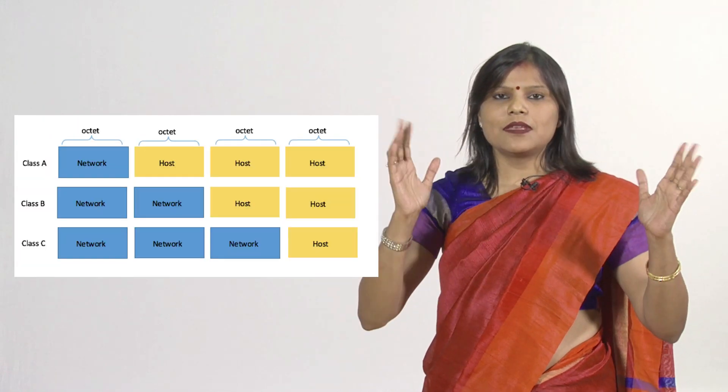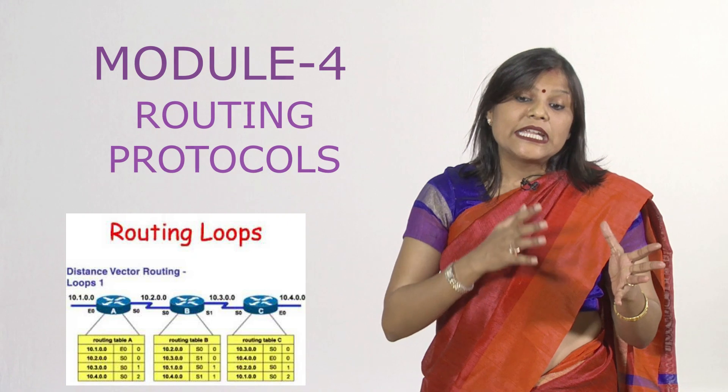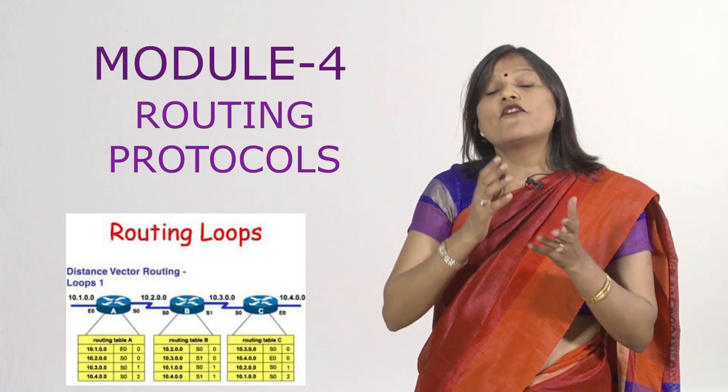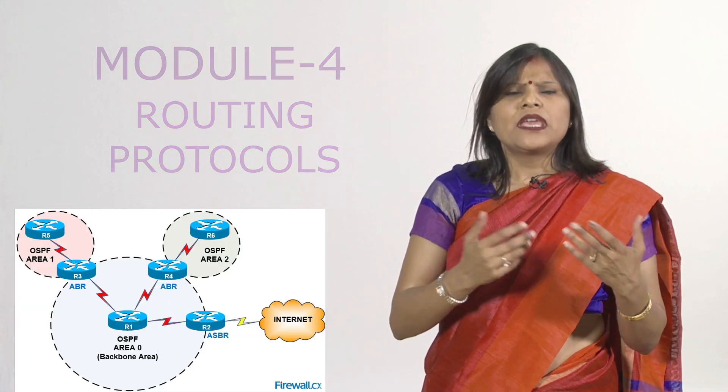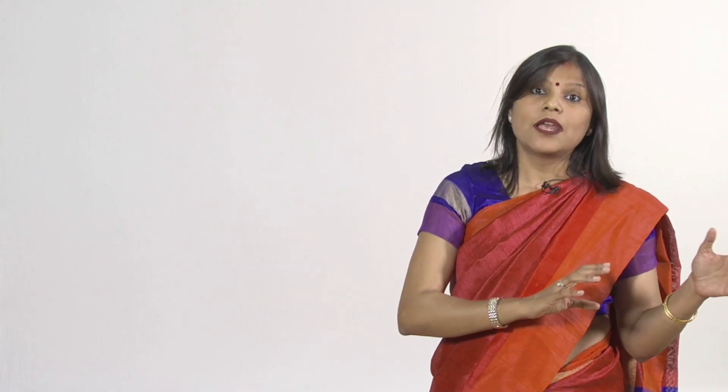We will discuss subnetting of Class A, B, and C with FLSM and VLSM. We will conclude Module 3 with the topic left from the last module — issues and challenges with the RIP protocol. In Module 4, routing protocols, we will go into detailed discussion of OSPF and EIGRP.